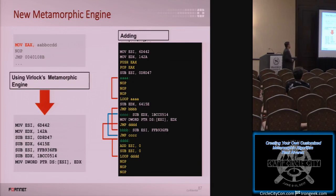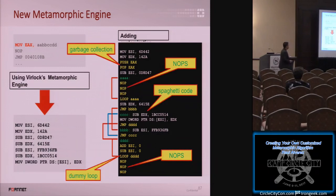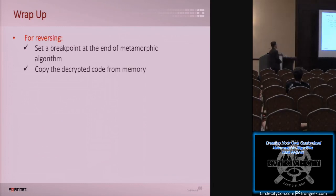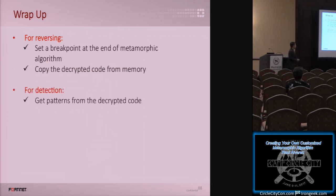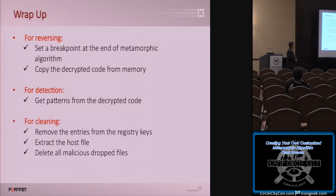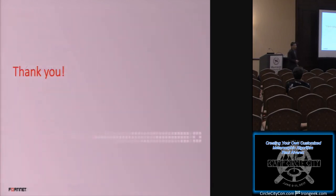That is the end of the presentation. For conclusion: we just built a customized metamorphic engine. For reversing, you usually set a breakpoint at the end of the metamorphic algorithm, then copy as much decrypted code as you can from memory. You have to get patterns from the decrypted code for detection. For cleaning, extract the host file — BirLock also has some registry keys — and of course delete all malicious dropped files. Any questions?